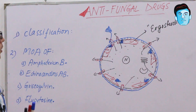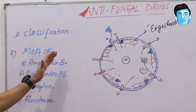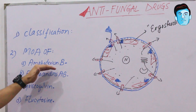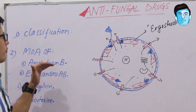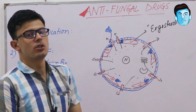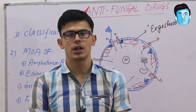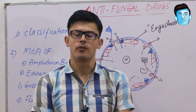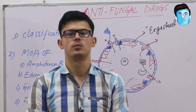Hopefully students you are getting the main mechanism of action of amphotericin B, as it is the most important and famous antifungal drug. This is all about antifungal drug classification and mechanism of action. If you like the video, make sure to subscribe to our channel and share it with your friends. Thank you.